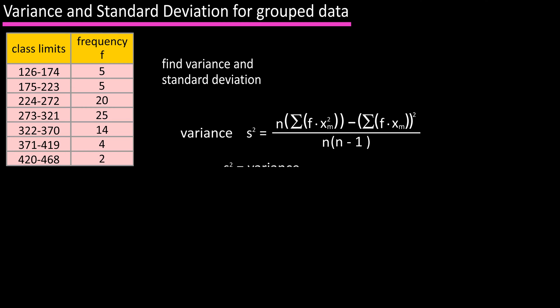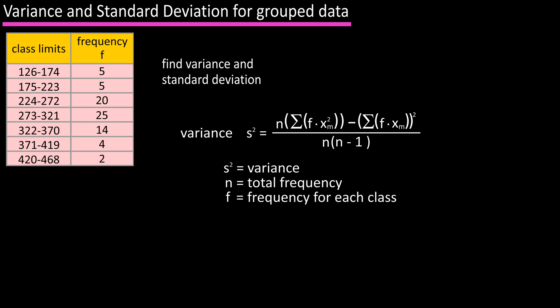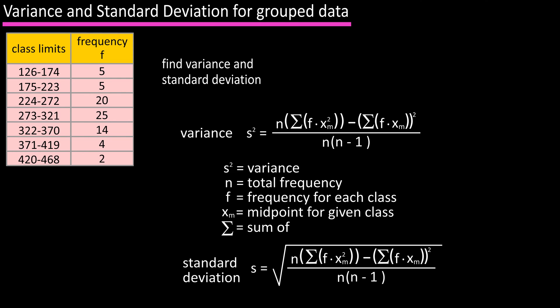In this equation, s² equals the sample variance, n equals the total frequency or the total number of values in the data set, f equals the frequency for a given class, xm equals the midpoint for a given class, and Σ (capital Greek letter sigma) means 'sum of.'